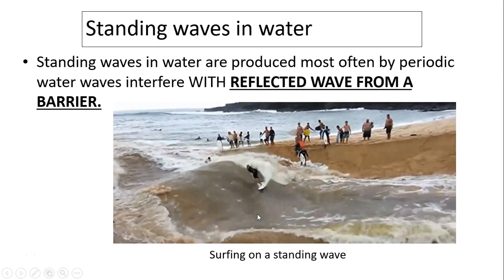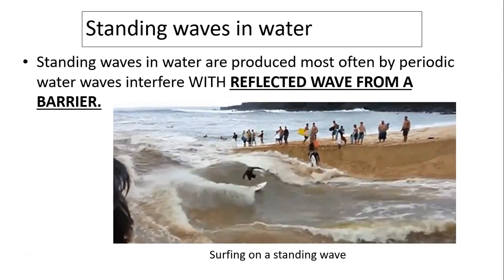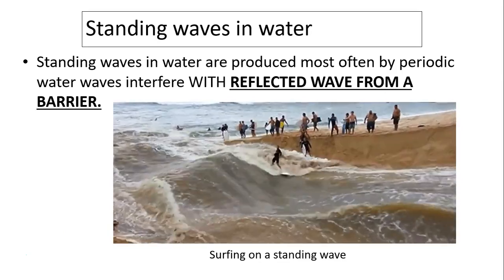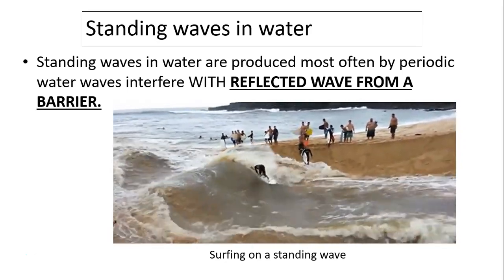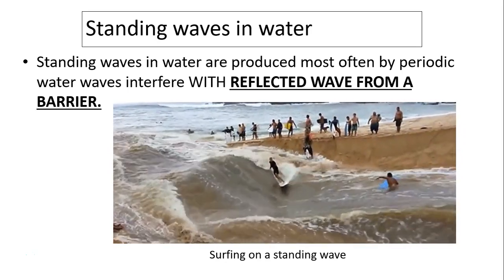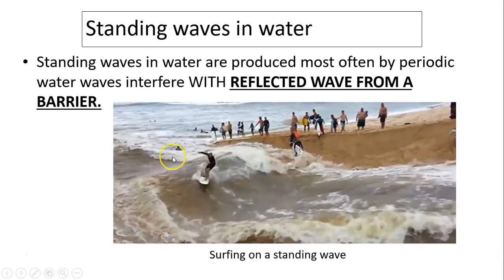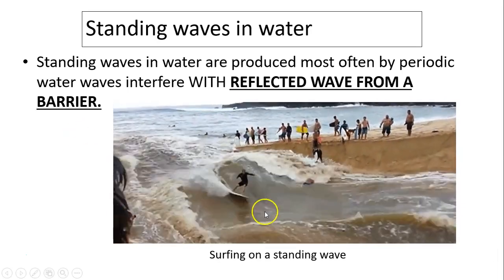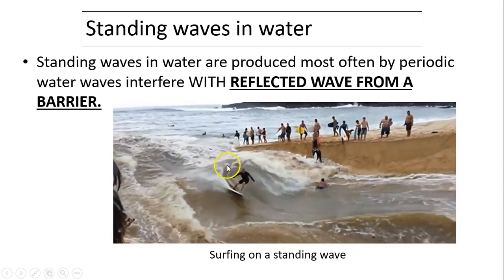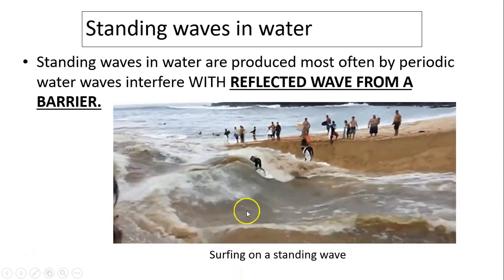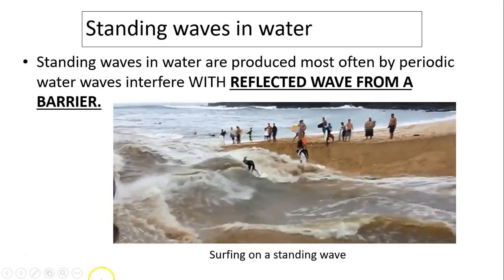Standing waves in water. Standing waves can be produced in water — most often when periodic water waves interfere with a reflected wave from a barrier. You can see surfers surfing on a standing wave; that is an example of a standing wave in water.